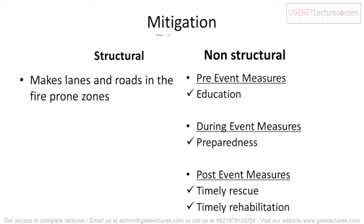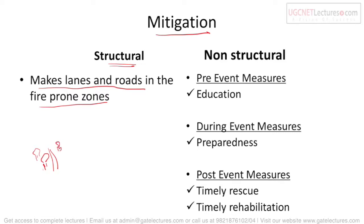To prevent wildfires, structural mitigation includes making lanes and roads in fire-prone zones inside forests. If we create lanes between trees, it breaks the continuity of the fire. For non-structural mitigations, pre-event measures include education — what to do and how to protect yourself if a wildfire occurs.